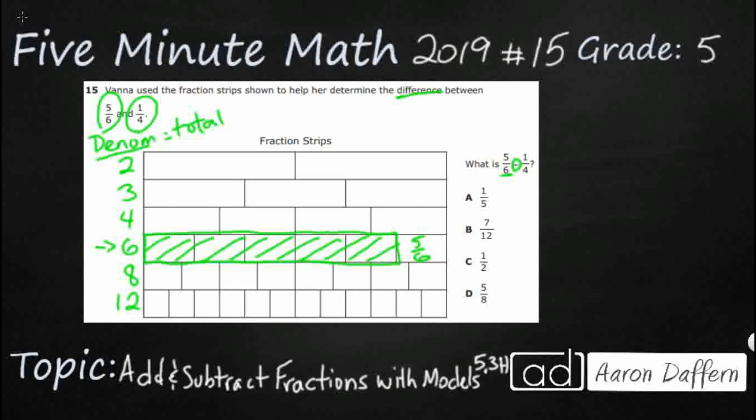Remember, this denominator is our bottom number, that's our total. So the numerator is the number selected. Sometimes they're shaded. In this case, we're just going to shade our own. That's the smaller amount. How many out of the total are we selecting? In this case, we're selecting five out of the six.